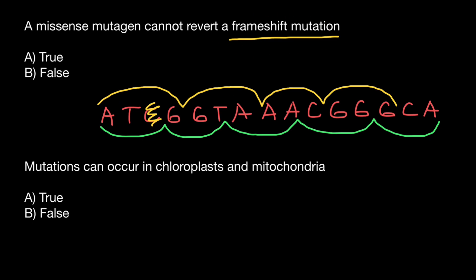Usually such frameshift mutations are also called nonsense mutations, because as you know, 64 codons specify all the amino acids and three of them specify stop codons. A normal protein sequence contains thousands of codons, so a stop codon doesn't appear for thousands of positions. But with such a mutation, we get a completely different sequence, and we expect that three out of 64 — or about one out of 20 — is going to be a stop codon. So this type of mutation leads to a short version of the protein, which is probably non-functional.